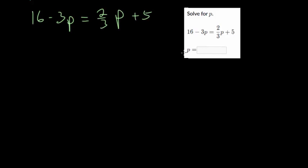The first method is just adding and subtracting fractions, just keep following it the same way. We want to move the variables to the same side. This side is positive, so we'll move them over here. So I will add 3P to each side. So you get that 16. These cancel out. Minus 3P plus 3P is 0. And we get 2 thirds P plus 3P.